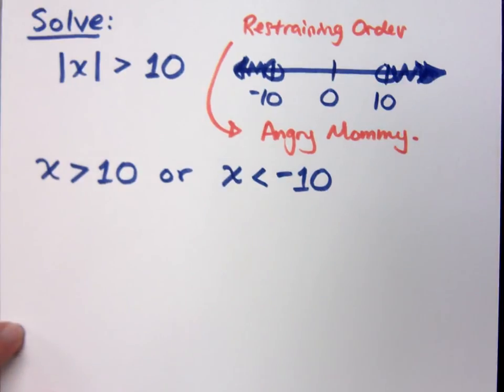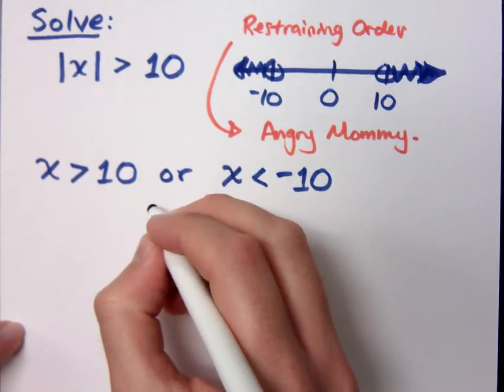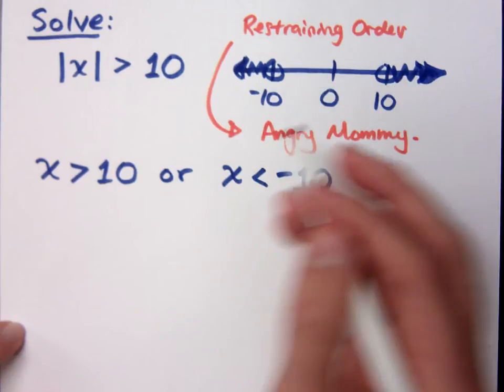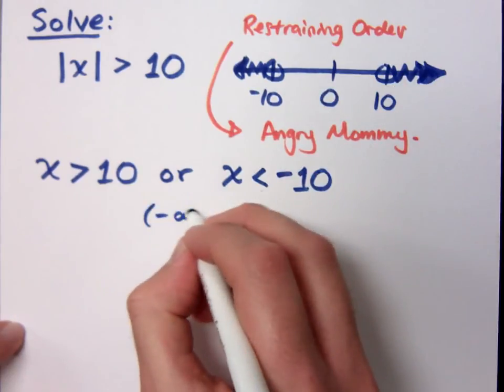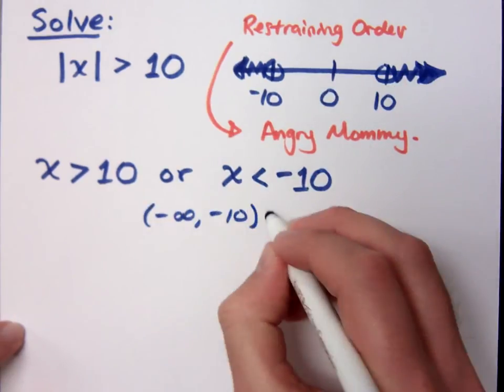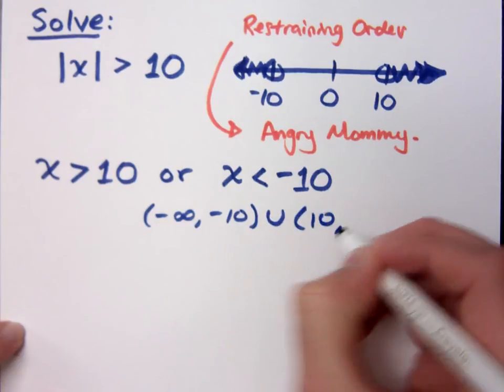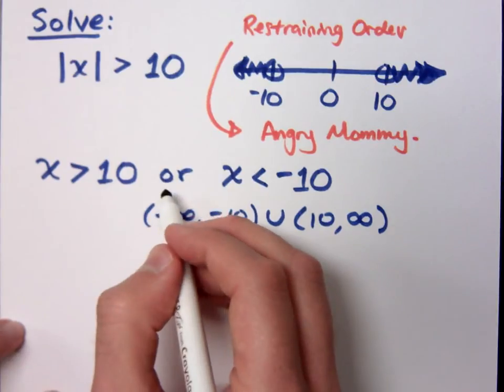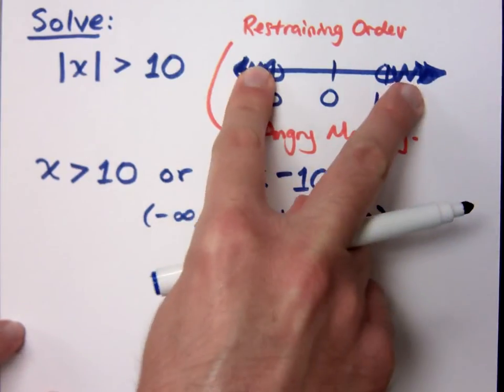So then what's your interval notation for this guy? Look what I have graphed here. Parenthesis, negative infinity, comma, negative 10, parenthesis, union, 10, parenthesis, 10, infinity, parenthesis. Remember the word or. Or means union. You take what you see and you put it together.